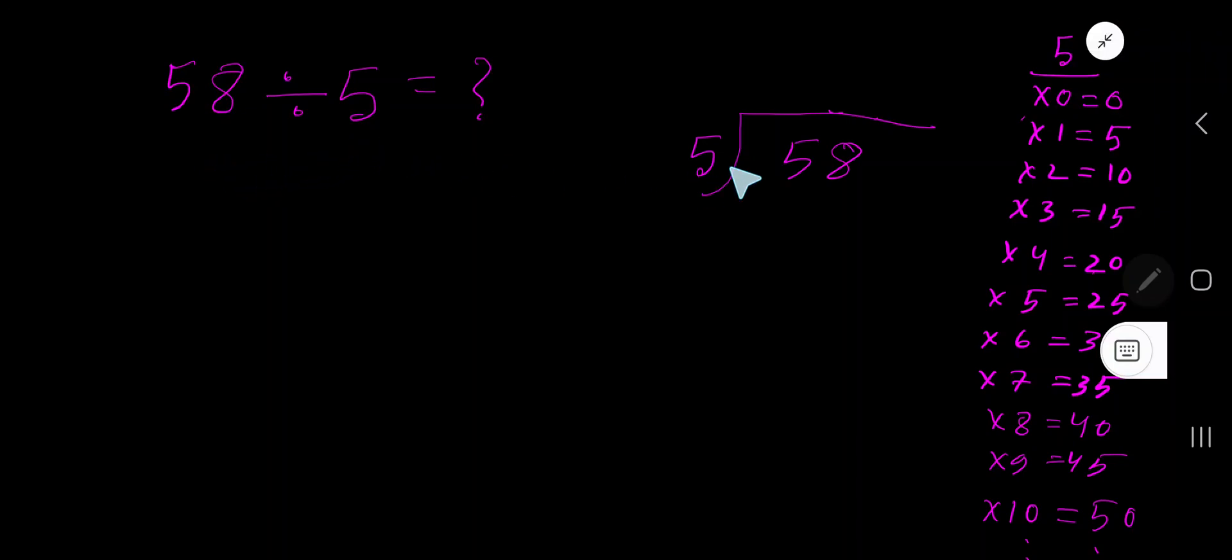58 divided by 5. Here 5 is the divisor, so we need the multiplication table of 5. 5 times 0 is 0, 5 times 1 is 5, 5 times 2 is 10, 5 times 3 is 15. To find the multiplication table of 5, just add 5 with the previous step: 0 plus 5 is 5, 5 plus 5 is 10, 10 plus 5 is 15.